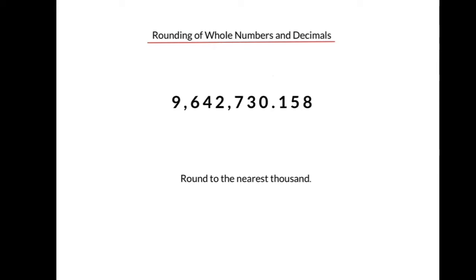Let's say we wanted to round this number to the nearest thousands. We have to locate the thousands column or place value. We know about the ones and the tens. Here we see that the 2 represents the thousands place value. So let's underline the 2.